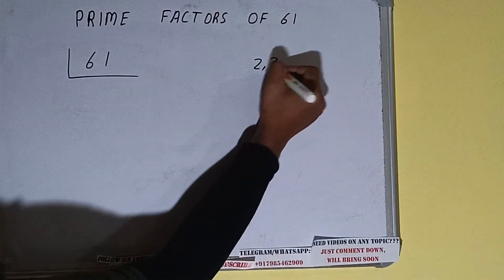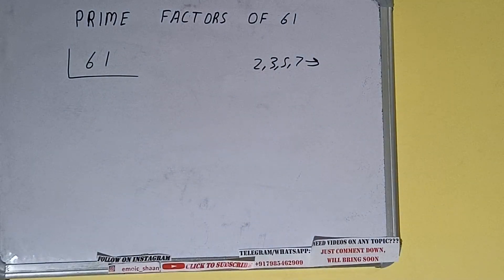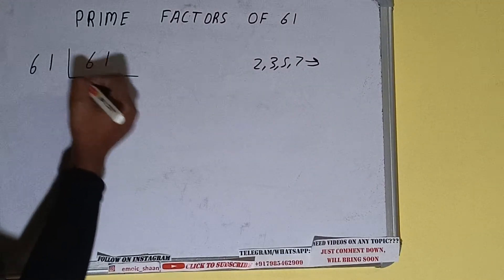All right, so if we talk about the number 61, the number 61 is also a prime number. So it is only divisible by itself, that is 61, and once we do so...